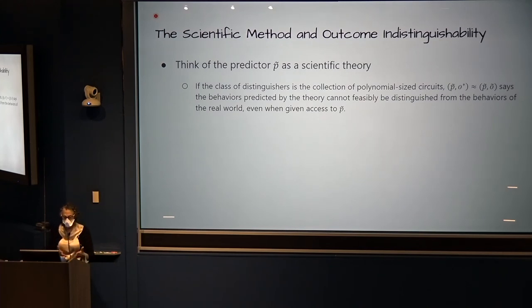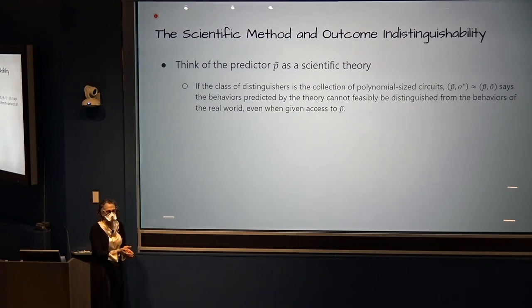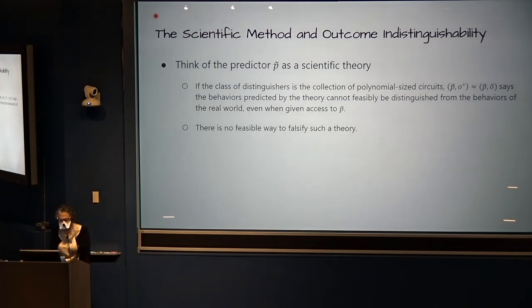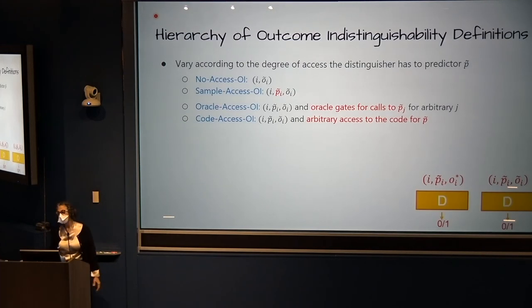When the class of distinguishers is the collection of all polynomial-sized circuits, the requirement would say that the behaviors predicted by the theory can't be distinguished from the behaviors of the real world. And there's no feasible way to falsify such a theory. We're not going to quite get there. But we like this because what we want from our predictors is that they should tell us what to see. And if the reality diverges, we need to change the predictor. We need to update it and fix this. And that process actually works.